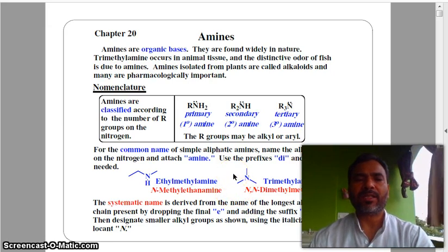The systematic name is derived from the name of the longest alkane chain, presently by dropping the final E and adding the suffix amine. Then designate smaller alkyl groups as shown using italicized N. You will understand in this slide: primary amine, secondary amine, tertiary amine, and common name.